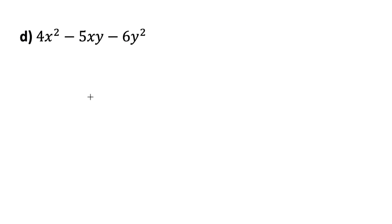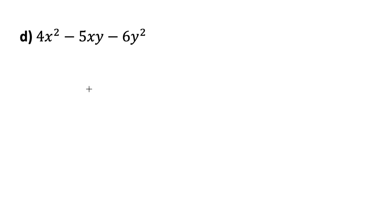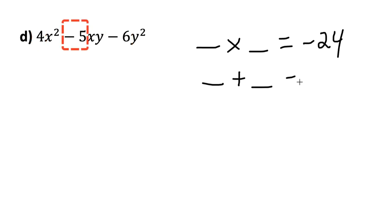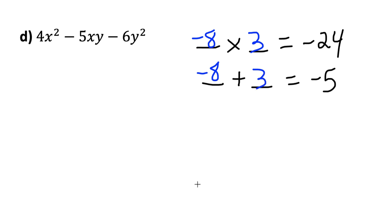Part d looks similar but notice the middle term has a y and the last term has a y squared. The same strategy still works. There's no common factor between the three terms, so we find numbers with a product of 4 times negative 6 — which is negative 24 — and a sum of negative 5. The numbers that satisfy this are negative 8 and 3: negative 8 × 3 = negative 24, and negative 8 + 3 = negative 5.